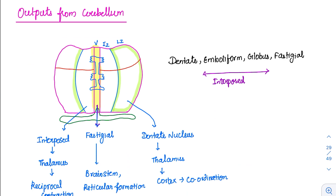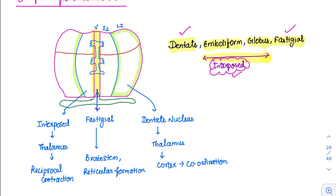Now coming to the outputs from the cerebellum. Output goes through four deep nuclei: the dentate nucleus, emboliform nucleus, globose, and fastigial. The intermediate two nuclei — emboliform and globose — are grouped together and called the interposed nucleus. So the major nuclei are dentate, interposed, and fastigial. The dentate is the most important nucleus. Since the lateral zone is involved in planning, output from the lateral zone goes to the dentate nucleus, then to the thalamus, and finally reaches the cortex, communicating about movement and coordination.